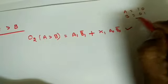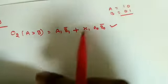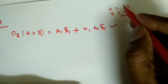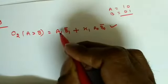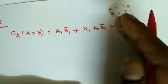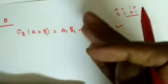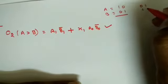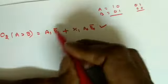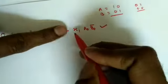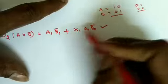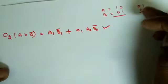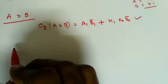We can verify with an example: suppose A = 10 and B = 01. We know A is greater than B. Substituting: A1=1, B1=0, so 1·0_bar = 1·1 = 1, and 1 plus anything is 1, so output is 1 confirming A is greater than B. Another case: A = 01, B = 00 — A1=0 so first term is zero, but X1=1 (both MSBs equal), A0=1, B0=0, so 1·1=1, again showing A is greater than B.